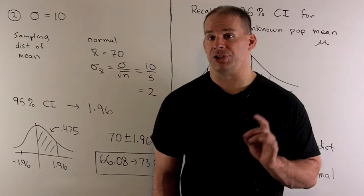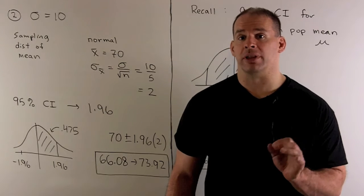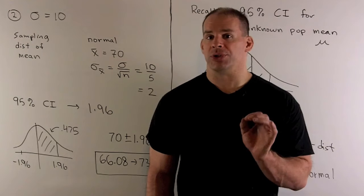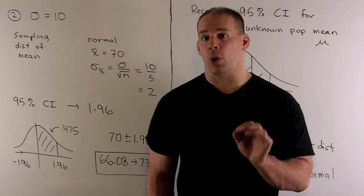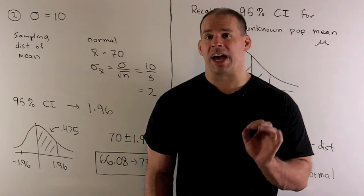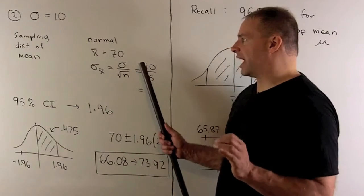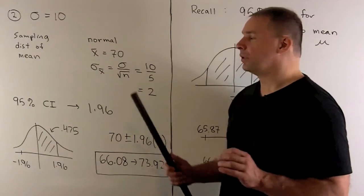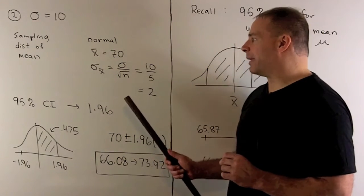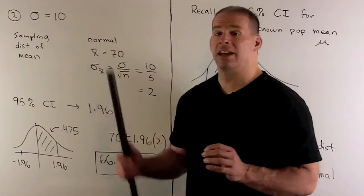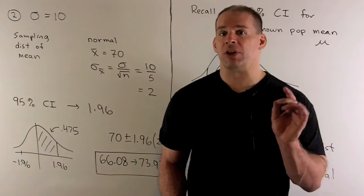Now, what happens if we know the population standard deviation? With sigma equal to 10, the sampling distribution of the mean changes. Before, we were using a t-distribution, but now, because we start with a normal distribution with a known standard deviation, the sampling distribution is also normal. The center of the confidence interval is still the sample mean, 70. The standard deviation of the sampling distribution is still sigma divided by the square root of the sample size: 10 divided by 5 equals 2. Note that this hasn't changed from the previous part because s equals sigma here.